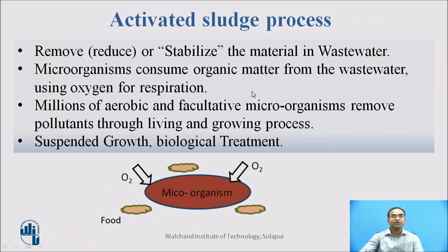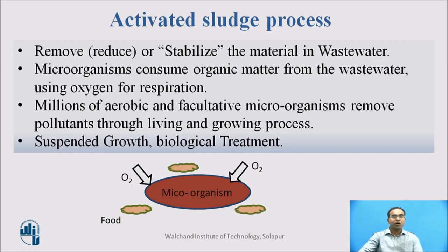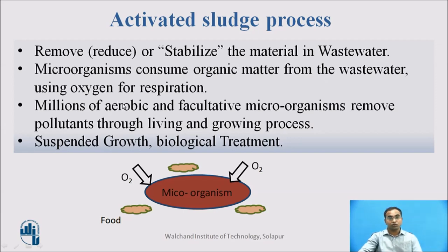What is activated sludge process? Basically, activated sludge process is a suspended growth biological treatment. Whatever biological matter is present in the wastewater will be in suspension form in the secondary plant. How can we treat that carbonaceous matter? We add some microorganisms which are aerobic or facultative in nature. Aerobic means the microorganisms require oxygen for their own growth. Facultative means those microorganisms which can sustain themselves with or without oxygen. These microorganisms will stabilize the material in the wastewater.